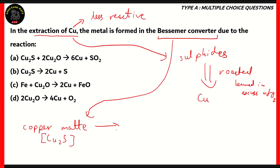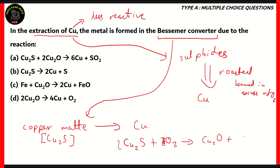Now, this copper mat is converted to copper. In order to do that, we need to roast copper mat. Therefore, we will mix Cu2S with oxygen. Cu2S plus O2 will give us Cu2O plus SO2. So, when copper mat reacts with oxygen, we get copper oxide and SO2.